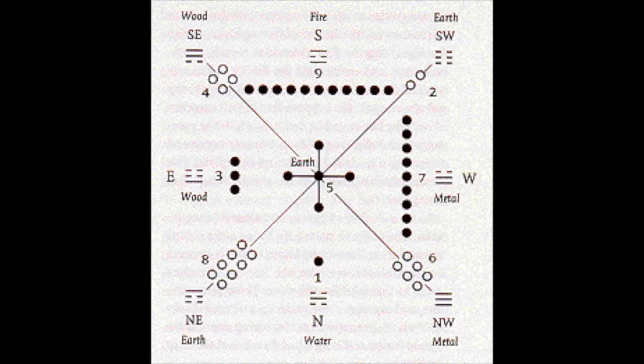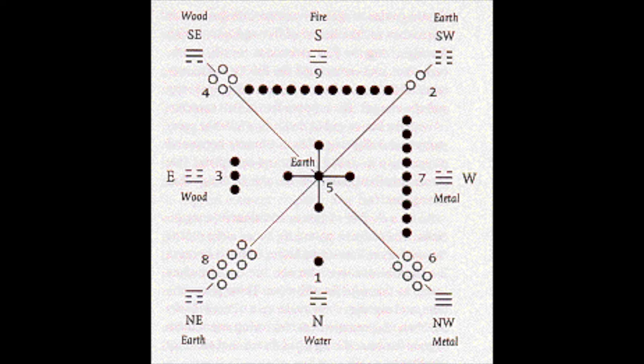The Lo Shu magic square is usually expressed in unary base 1 dots of either black, symbolizing yin the masculine active influence, or white, symbolizing yang the feminine passive influence. Each of these except the central most numerical amount, the integer 5, is associated with one of the eight trigrams of the I Ching Bagua.